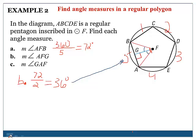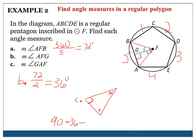For part C, we have angle GAF. Blowing up this triangle: we have our right angle created by the apothem GF, and the angle at the top is 36 degrees from part B. Since the angles of a triangle add up to 180, we solve: 90 + 36 + x = 180, giving us x = 54 degrees.